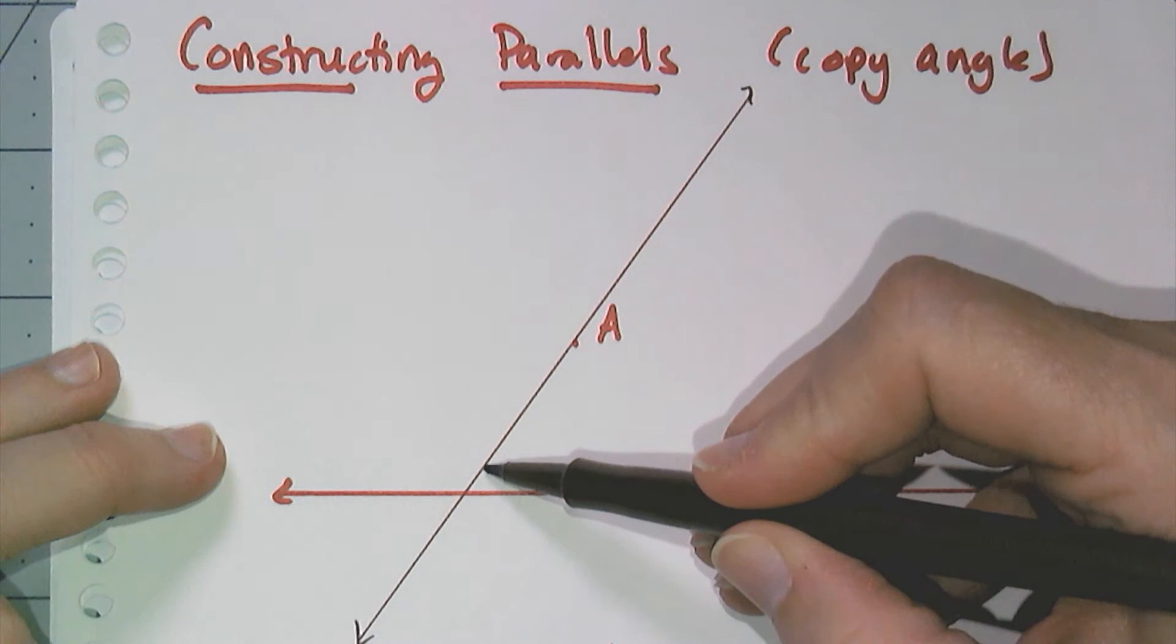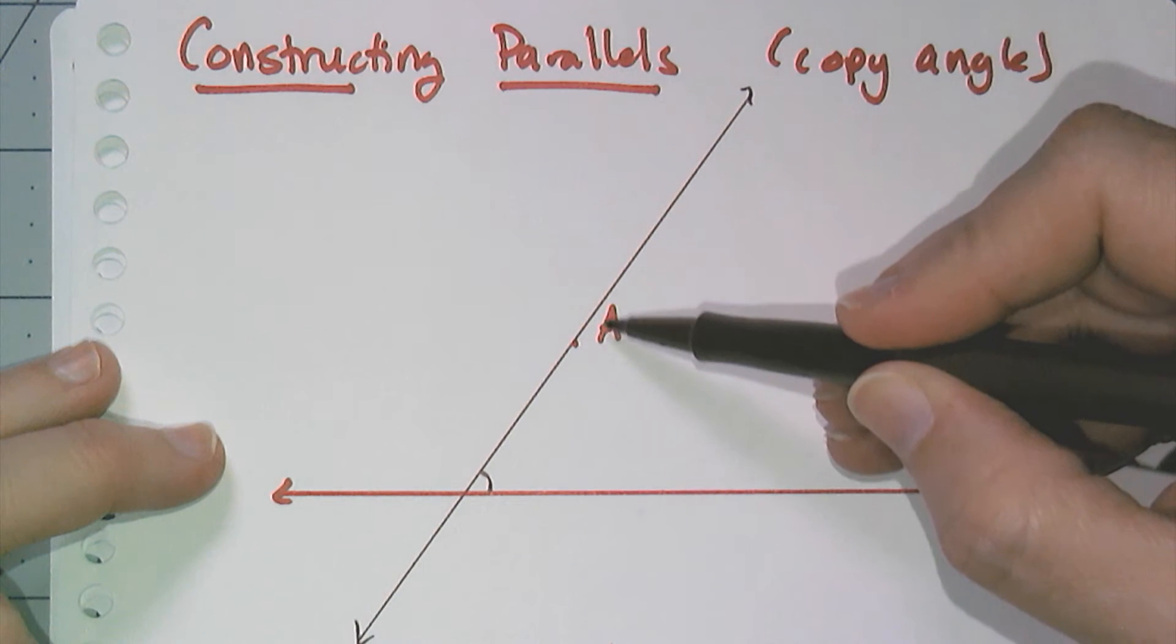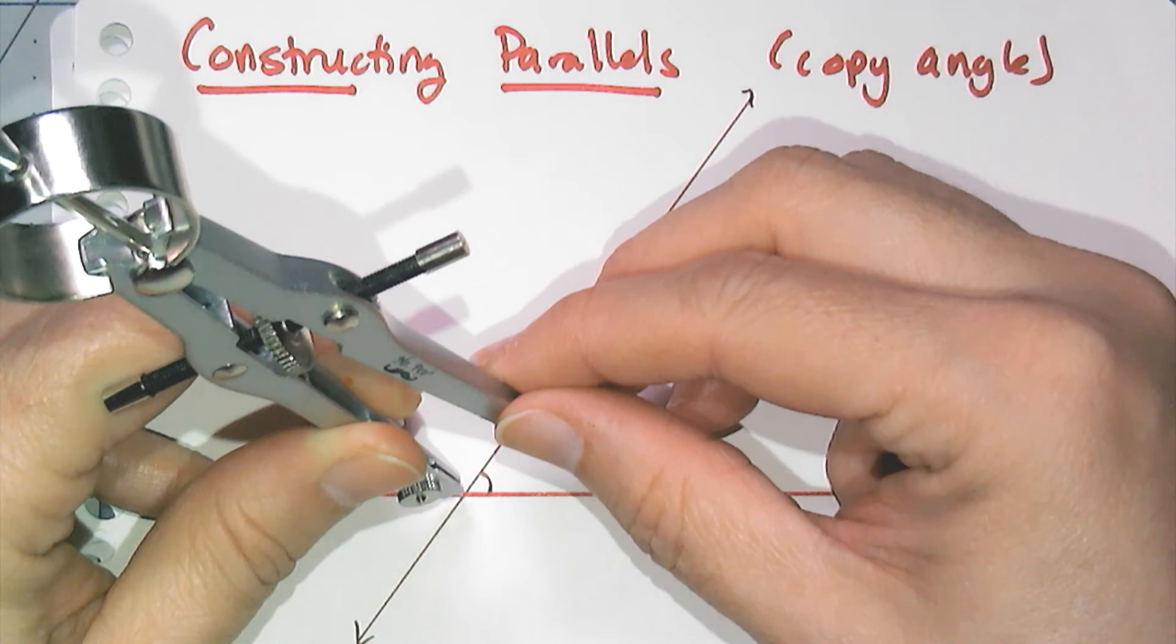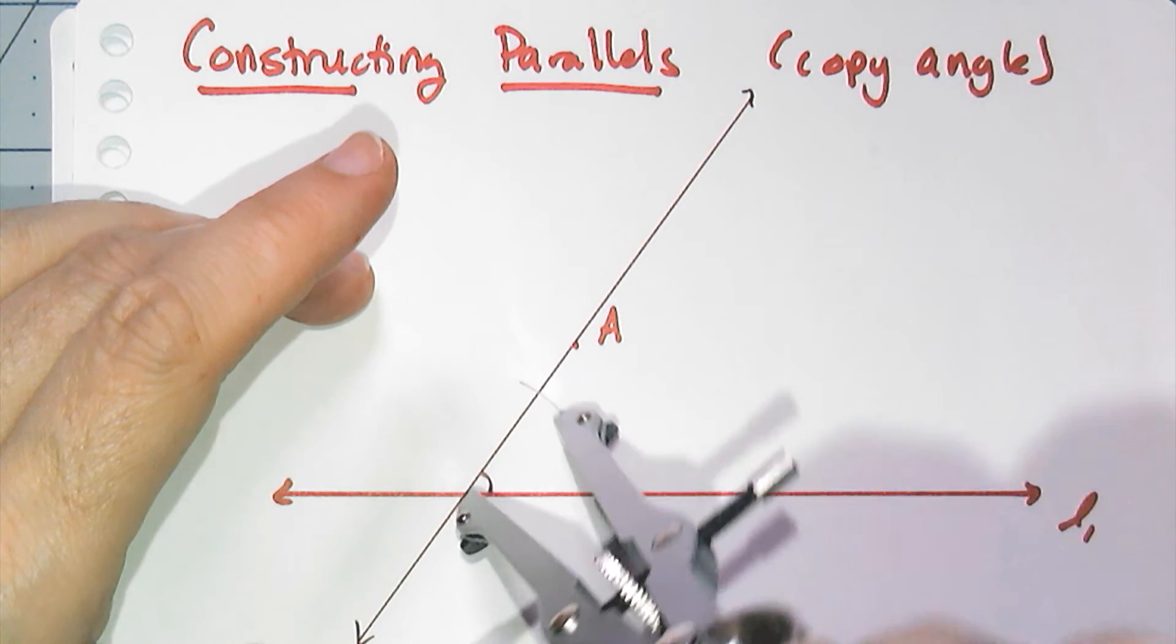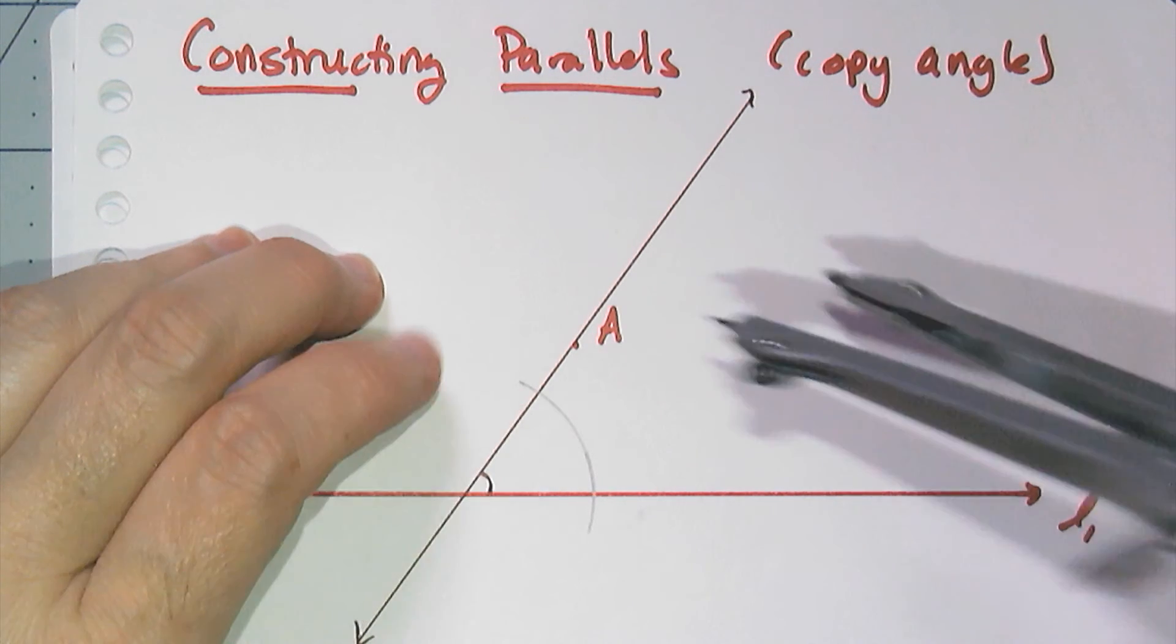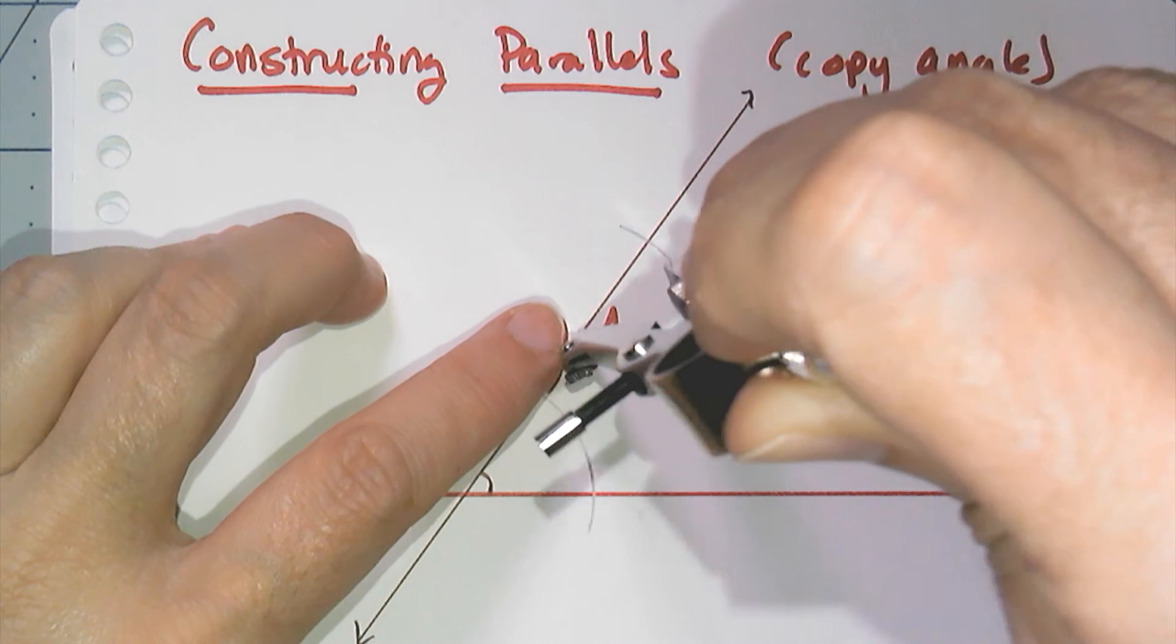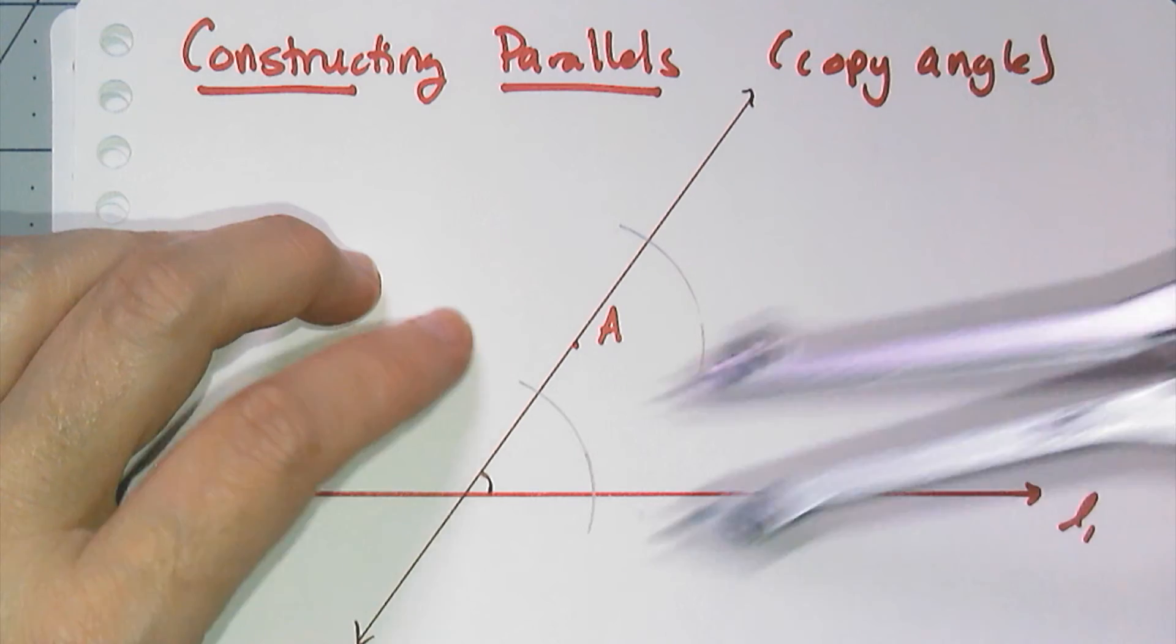So now this is the angle right here that I need to replicate up here, right? So that requires me to remember how to copy an angle. And so I have to put my compass point on the vertex and I need to swing an arc that intersects both sides of the angle. And I need to do something similar up here. So I put my compass point at A and I swing an arc that's going to be long enough to intersect another arc that I got to draw.